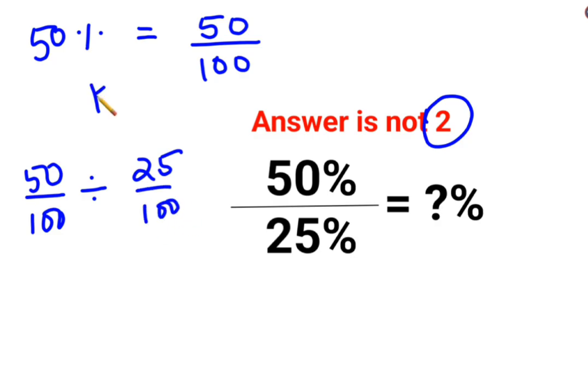Whenever you have division, we will follow the rule of KCF, where K stands for keeping the first number as it is, C stands for changing the division sign to multiplication, F stands for flipping or taking reciprocal of 25 upon 100, which is 100 upon 25.